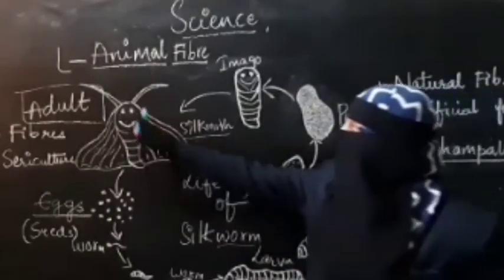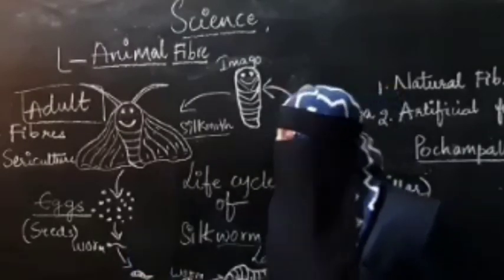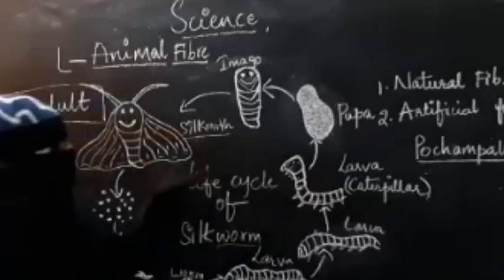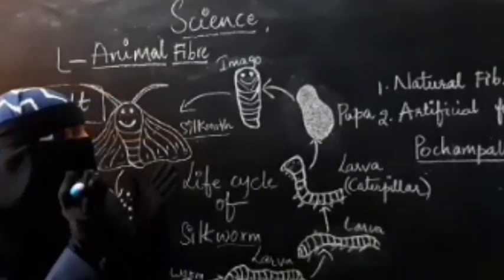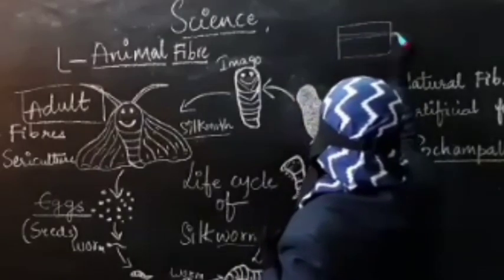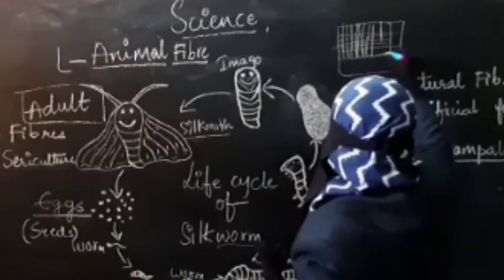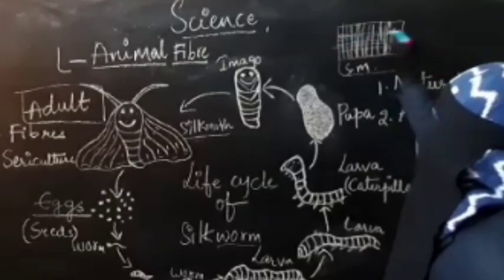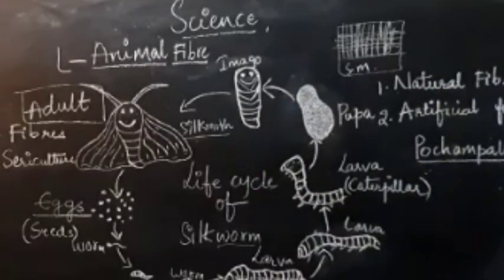The silk moth looks like a butterfly. These moths cannot be kept open — they would fly away. So the silk moths are kept in grill mesh boxes. These boxes have a mosquito net-type covering so that the silk moths also get air and sunlight for their growth.